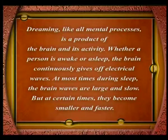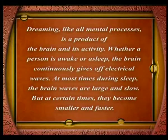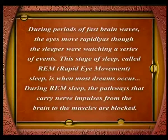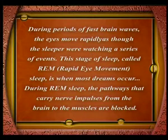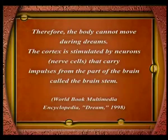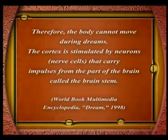A dream is an assembly of perceptions resulting from the interpretation of stimuli reaching the relevant centers in our brains. Dreaming, like all mental processes, is a product of the brain and its activity. Whether a person is awake or asleep, the brain continuously gives off electrical waves. At most times during sleep the brain waves are large and slow, but at certain times they become smaller and faster. During periods of fast brain waves, the eyes move rapidly — this stage of sleep, called REM (rapid eye movement) sleep, is when most dreams occur. During REM sleep, the pathways that carry nerve impulses from the brain to the muscles are blocked, so the body cannot move during dreams. The cortex is stimulated by neurons that carry impulses from the brain stem.